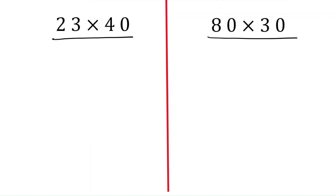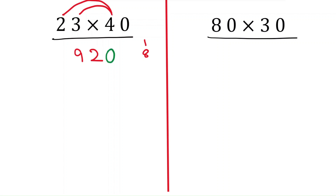When you have zero in any one of the two-digit numbers, let's see how to do the multiplication. Take the example 23 times 40. I will just multiply four with the other digits: four times three is twelve, and one; four times two is eight, add one — nine. Since there is one zero, add zero to the answer — 920 is the product.